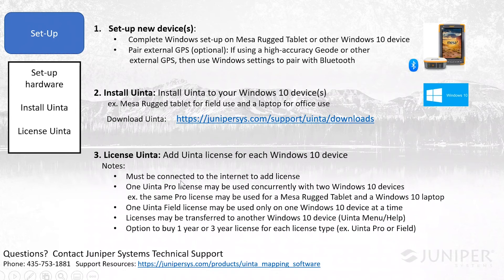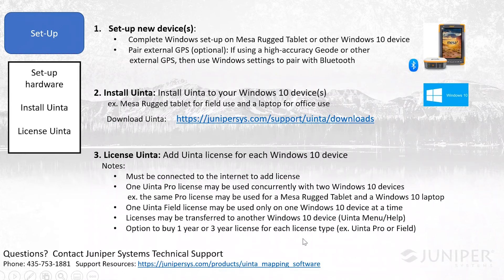A few notes about UINTA licensing: you must be connected to the internet to license it the first time. After that, you don't need internet at all to use UINTA unless you're using a cloud project. A UINTA Pro license can be used on two devices at a time, while a UINTA Field license can only be used on one Windows 10 device at a time. These licenses can be transferred to another Windows 10 device by going to the UINTA menu and selecting Help. All licenses are available with either a one-year or three-year license type.